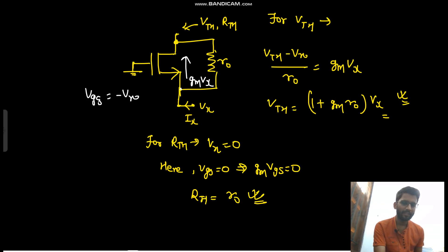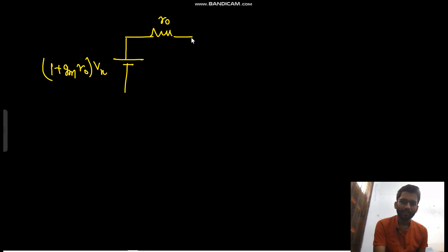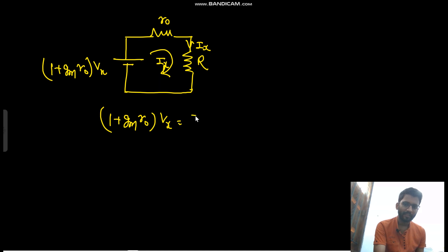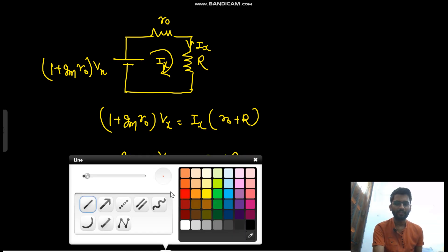Now replace the circuit: Vth = (1 + gm·R_naught)·Vx, Rth = R_naught, and load R. Since the same current Ix flows through the whole series circuit: (1 + gm·R_naught)·Vx = Ix·(R_naught + R). Therefore R_in = Vx / Ix = (R_naught + R) / (1 + gm·R_naught). That is the final derived result.